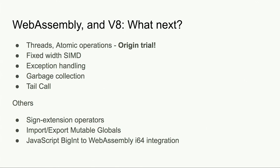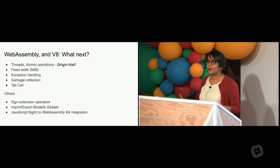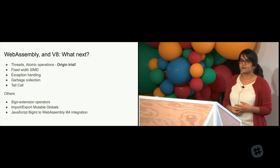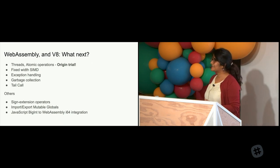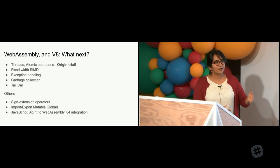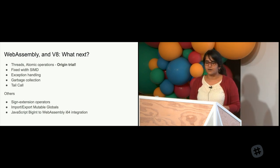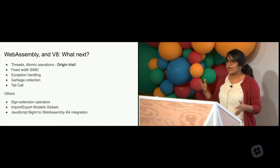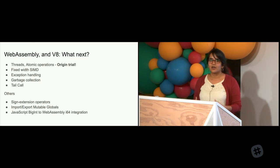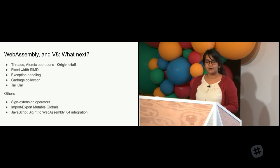Now I want to talk about what our team is working on for the future. We heard Lynn talk about all of the things on the roadmap for WebAssembly in general. From the Chrome side, we've put a lot of work into p-threads and atomic operations for WebAssembly, and we do have an origin trial. If this is something you want to try, please come talk to me - I can show you how to get in on the origin trial or enable that with the experimental threads flag. This is all still in active development and we're looking for active feedback.